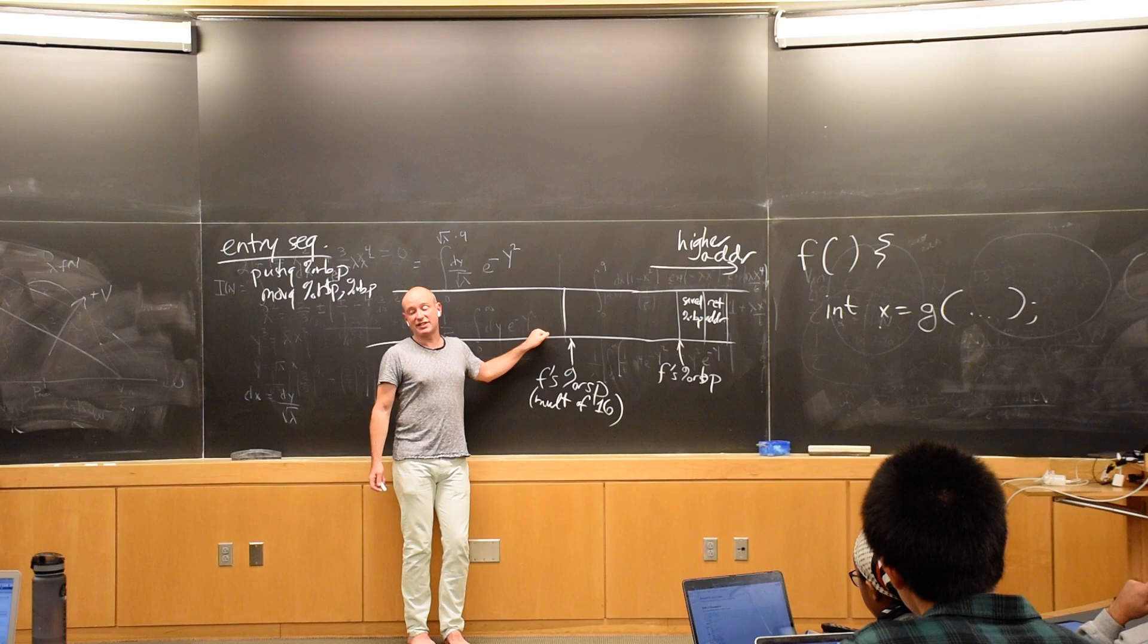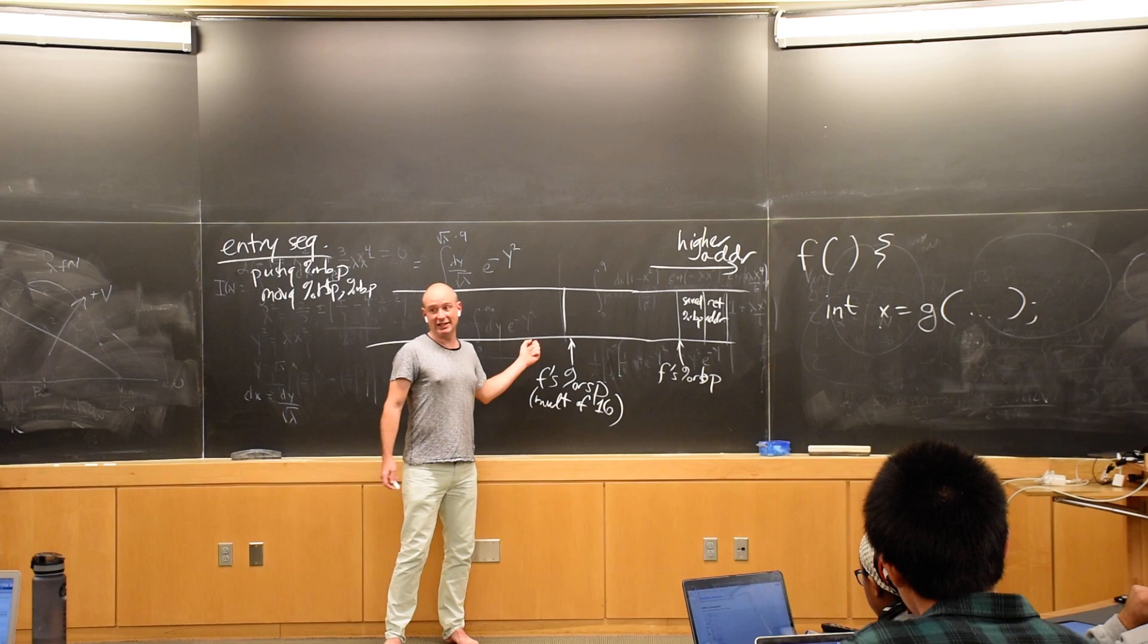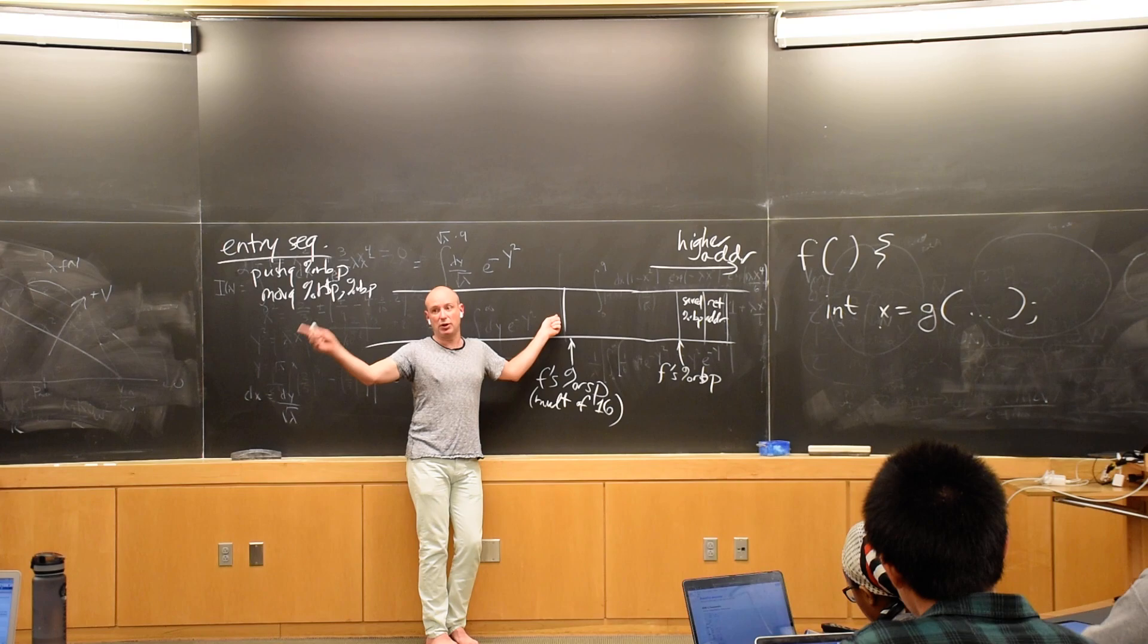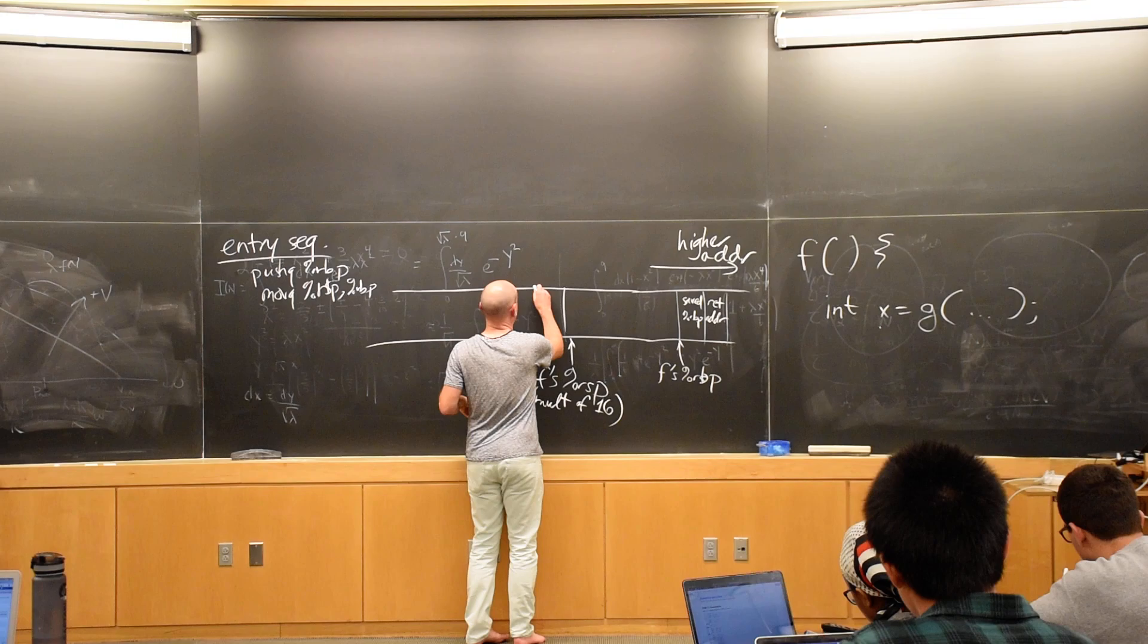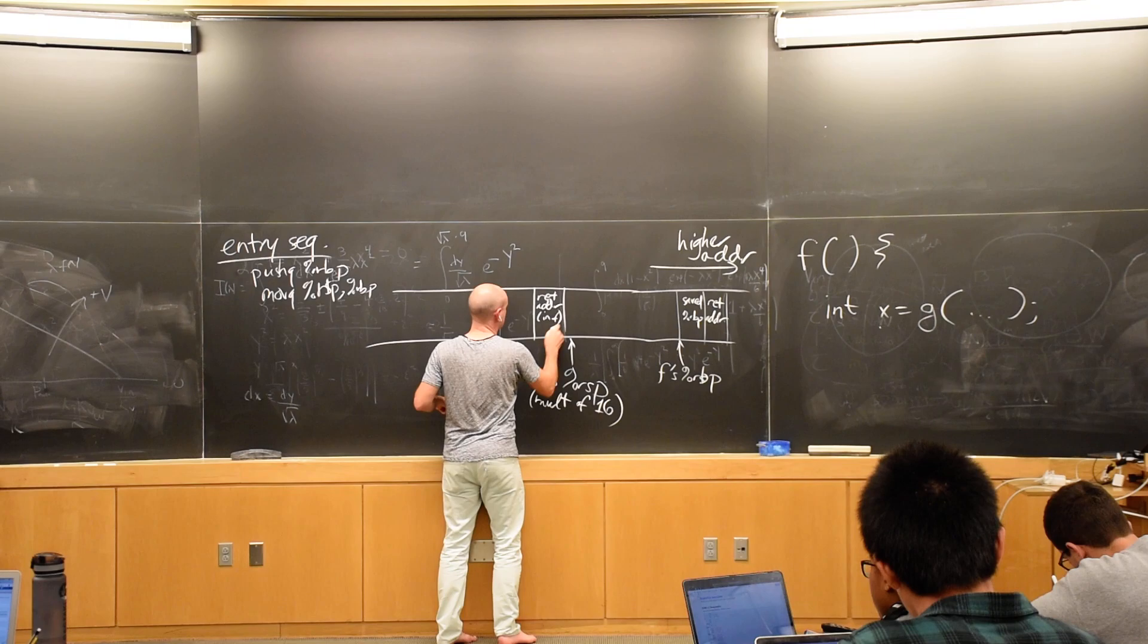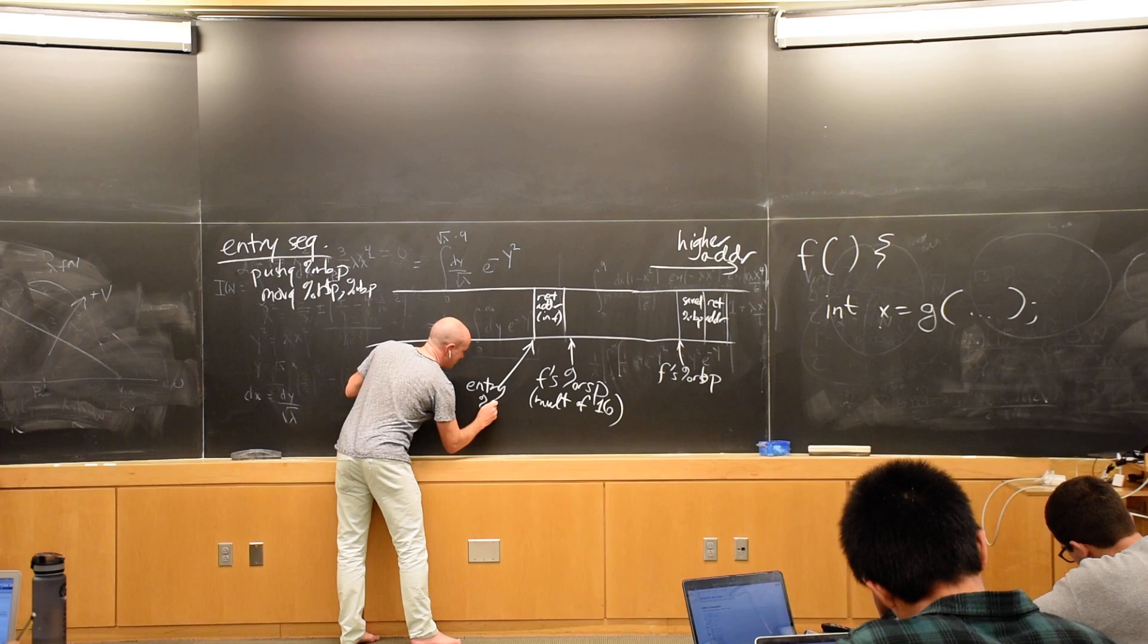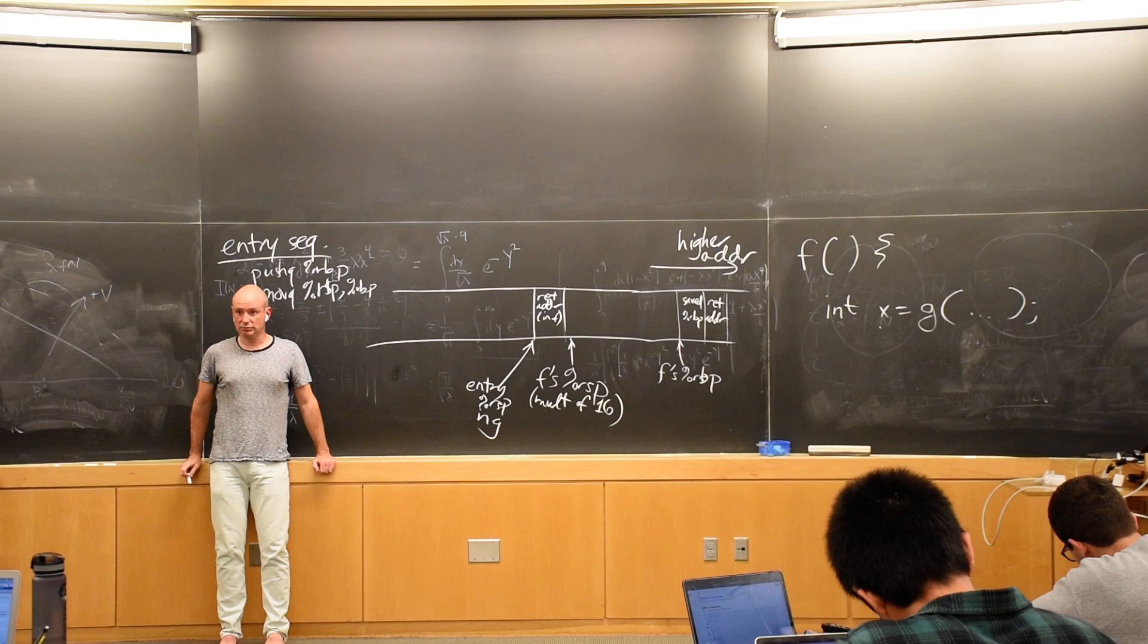It decrements the stack pointer by 8. It stores the return address, which is the address of the very next instruction in the stack space that it just created. And then it sets the instruction pointer to the called address. So this is the entry RSP in G. Okay?